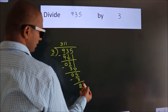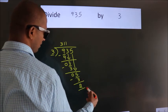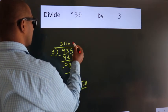After this, no more numbers to bring it down. So we stop here. This is our remainder. This is our quotient.